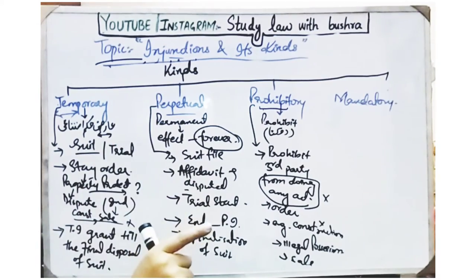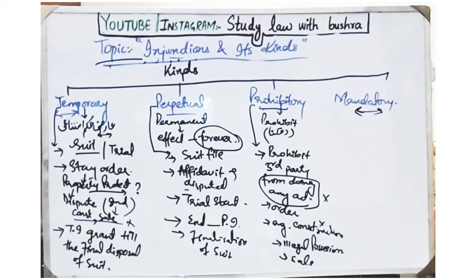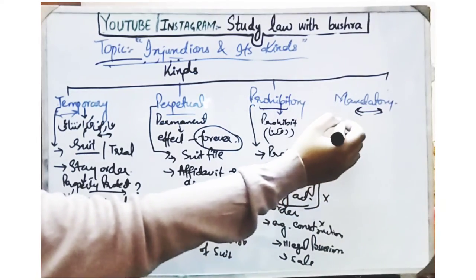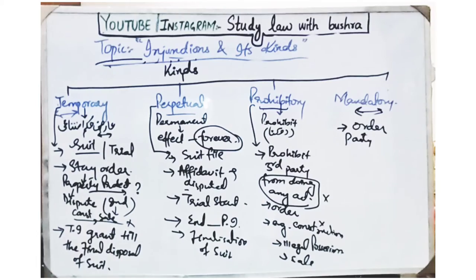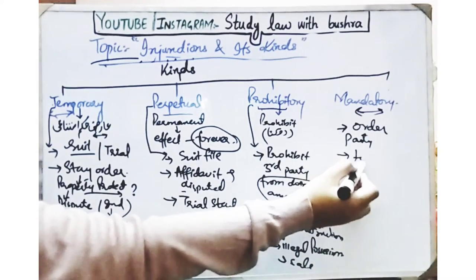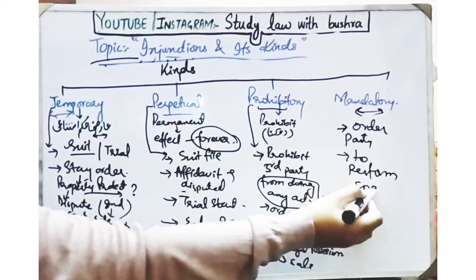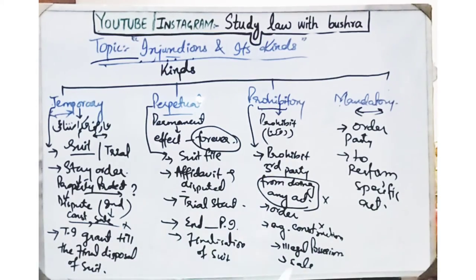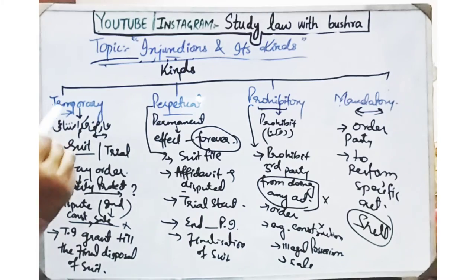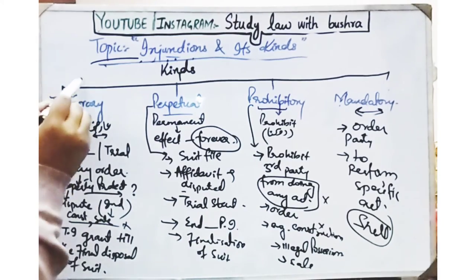After that, the last type we have is mandatory injunctions. From the name itself it is clear that you are being ordered to do something — you are under obligation to perform that act, you are bound to perform that act. So what are mandatory injunctions? It is the fourth type of injunctions. In this type of injunction, the court issues an order to any party in order to do a particular act in a particular way. The party is bound to perform this act — the word 'shall' is used here. You are under obligation to perform that act. So these were the four kinds of injunctions.